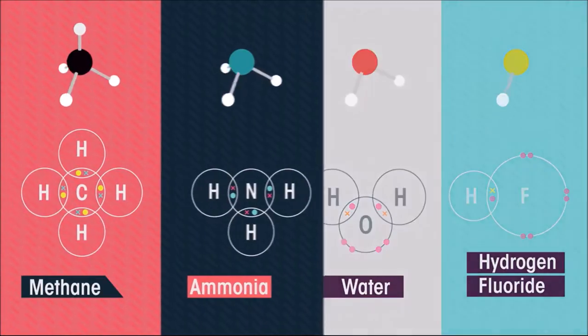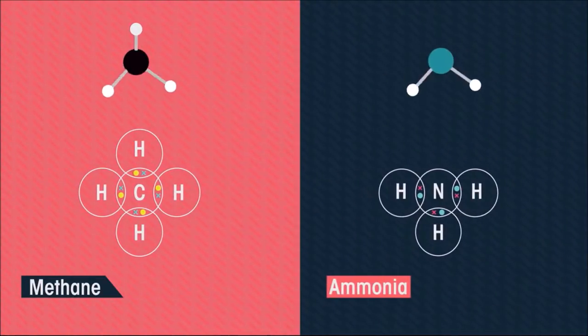Ammonia has two electrons, called a lone pair of electrons, occupying the fourth position. These electrons take up space. We can't pretend they're not there. In fact, because electrons are negatively charged, lone pairs repel bonds even more strongly than bonds repel each other. This makes ammonia less symmetric than methane.